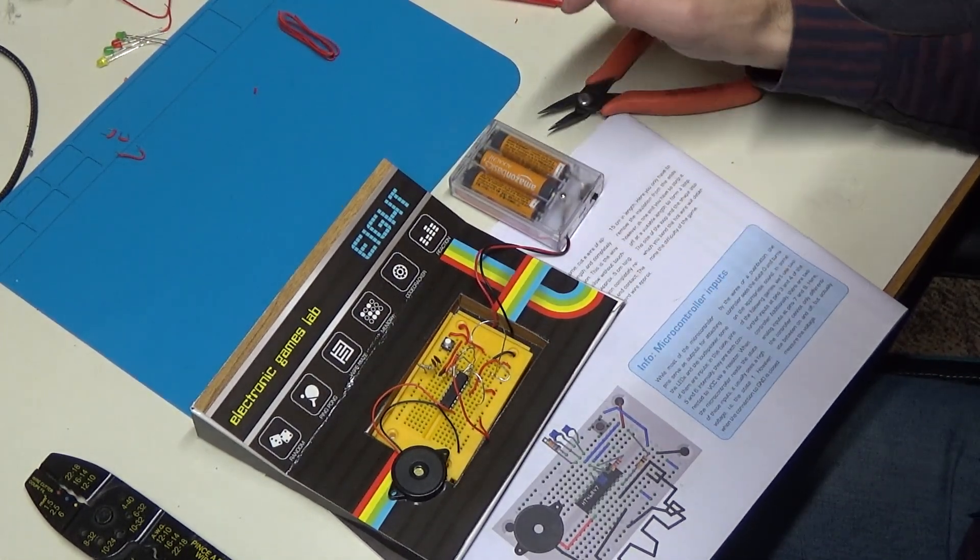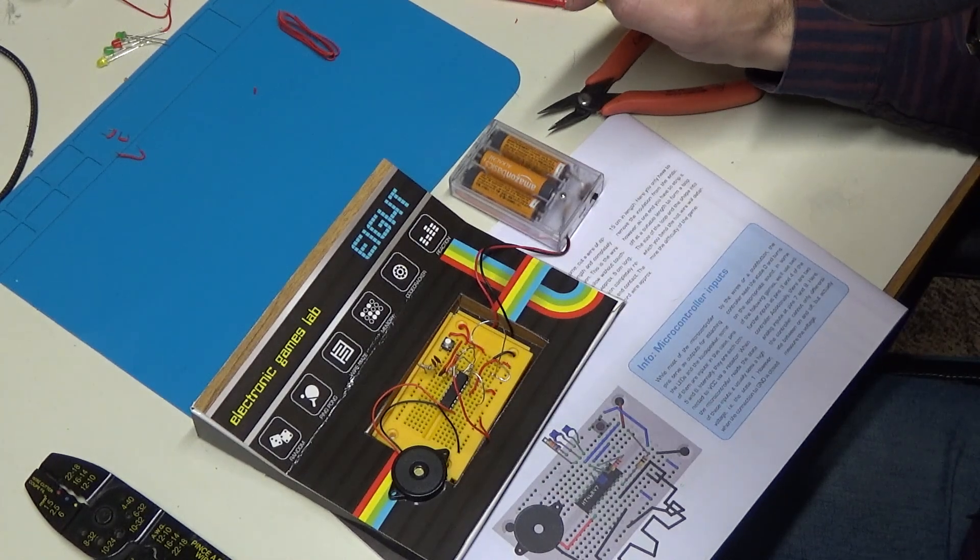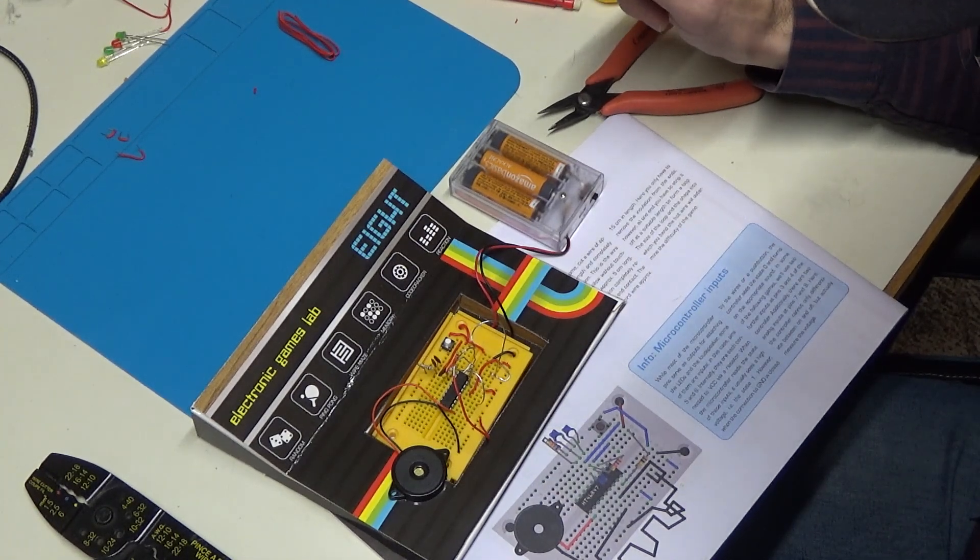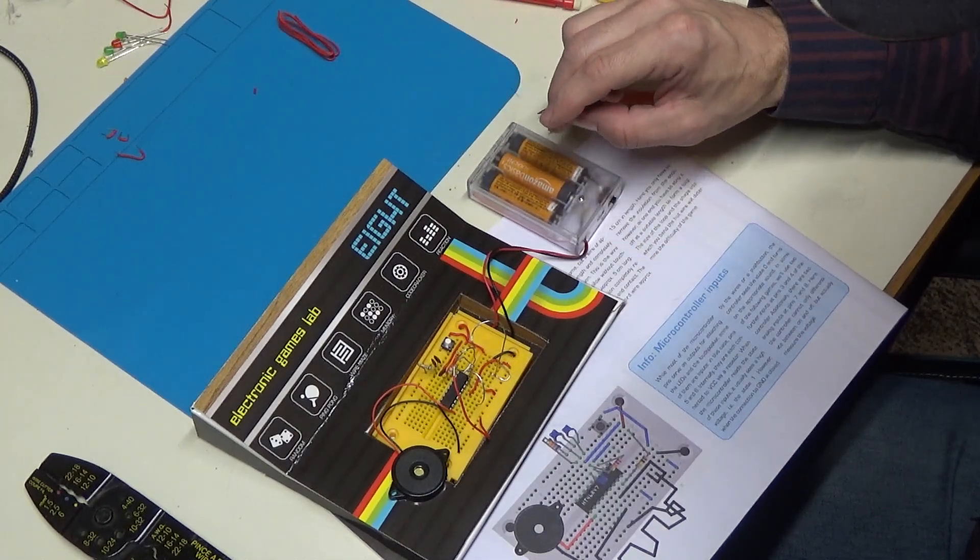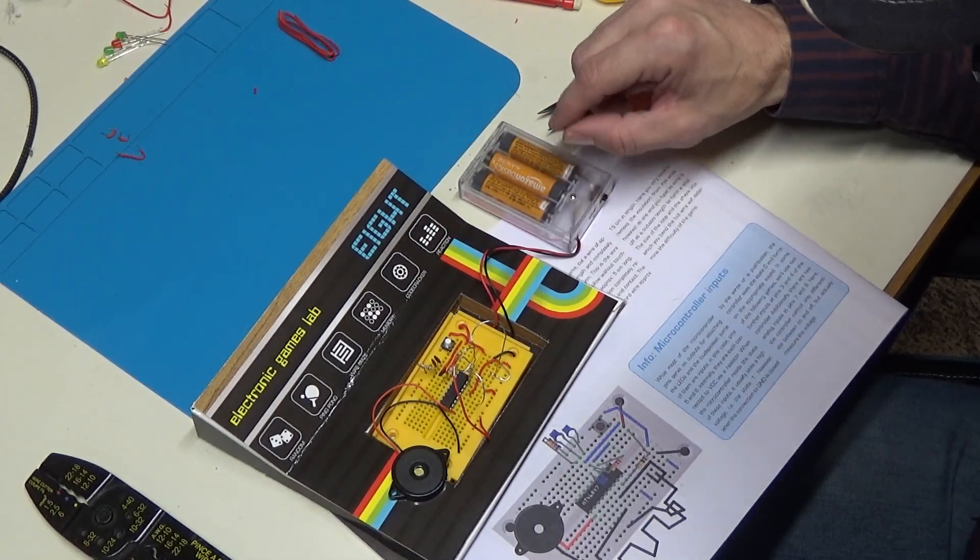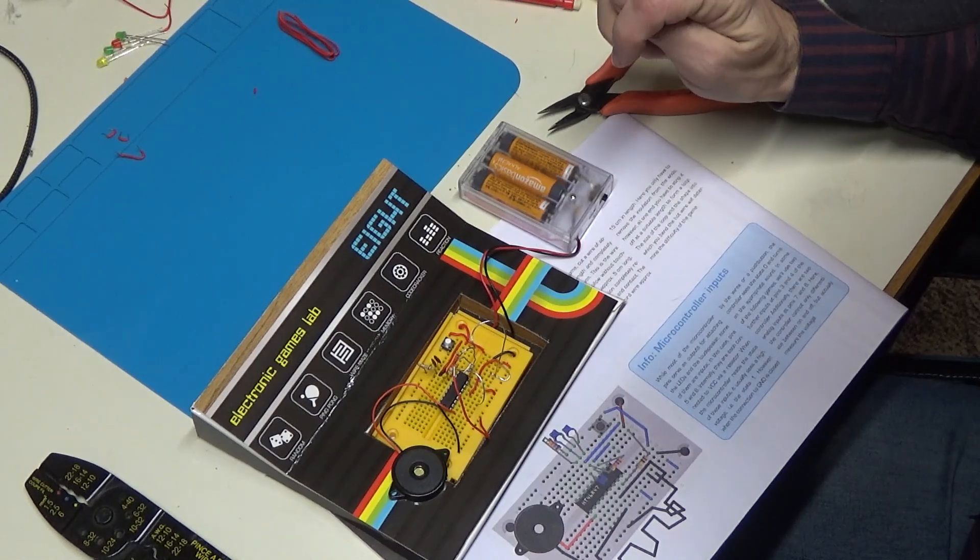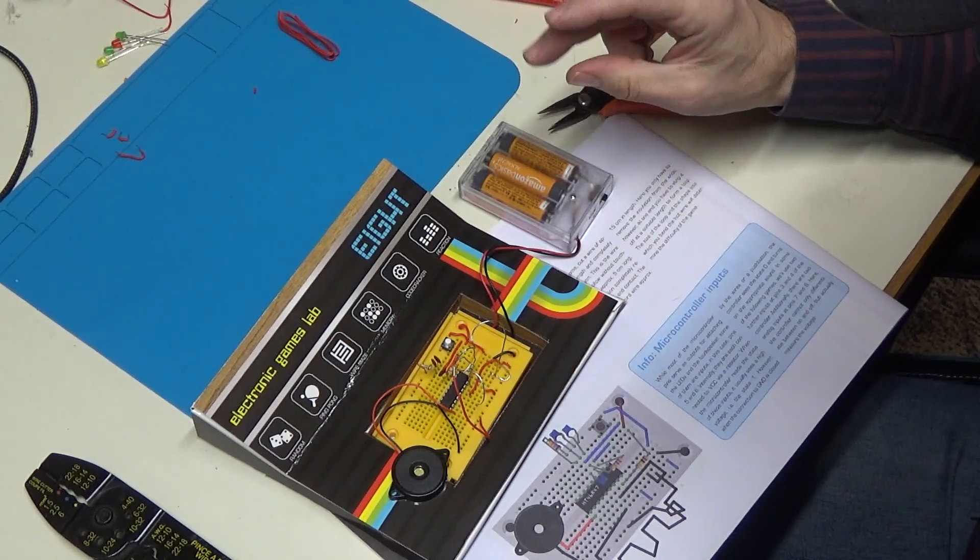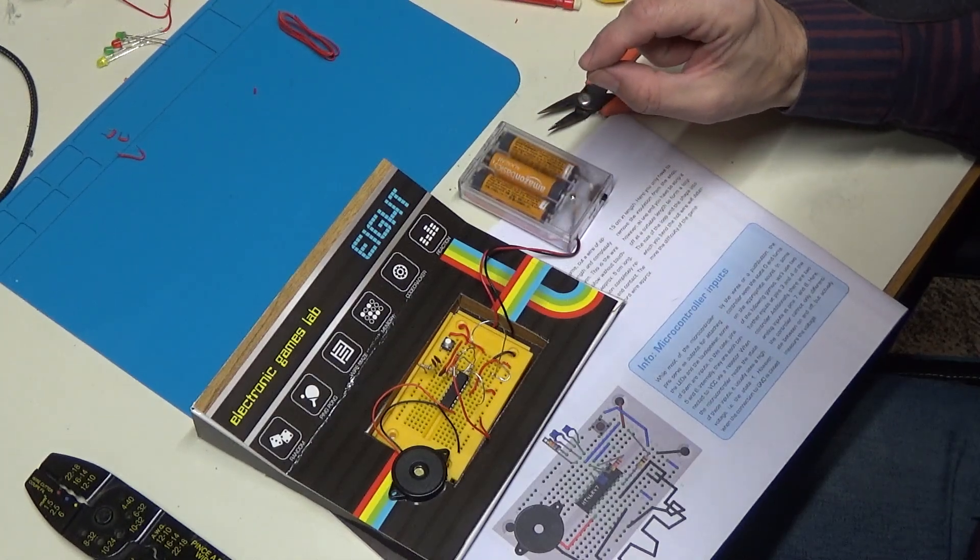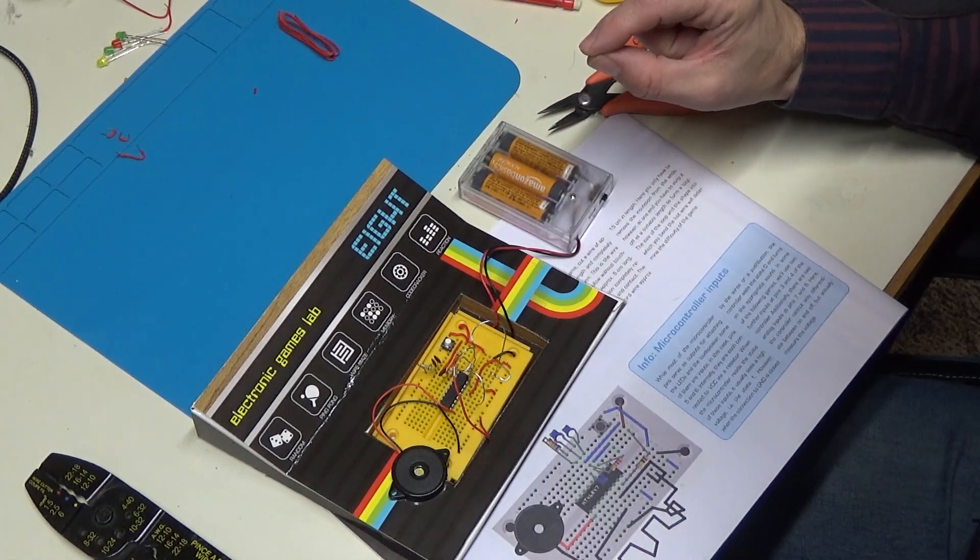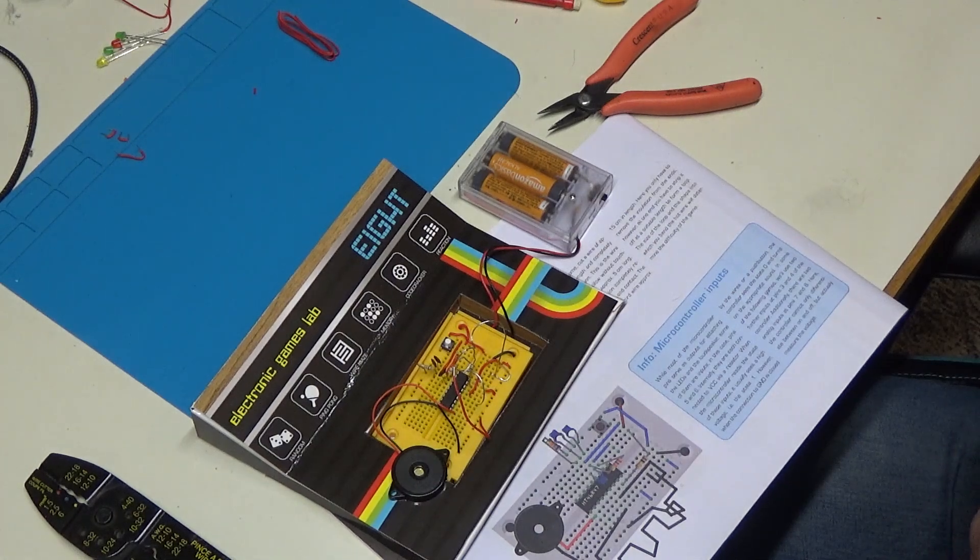In the blue box, while most of the microcontroller pins serve as outputs for attaching the LEDs and the loudspeaker, some of them are inputs. In this case, pins five and six. Internally, they are each connected to power via a resistor. When the microcontroller reads the state of these inputs, it usually sees a high voltage, i.e. state one.